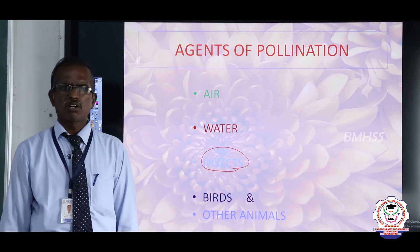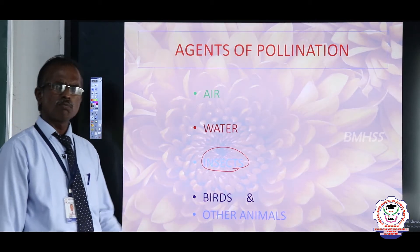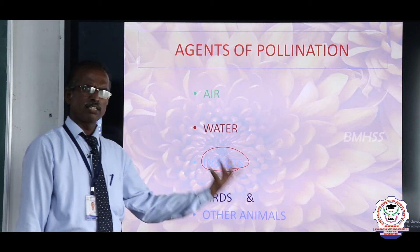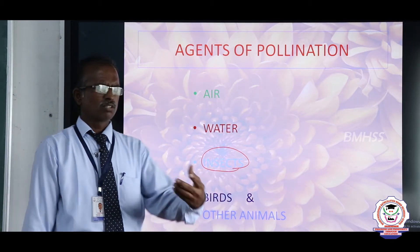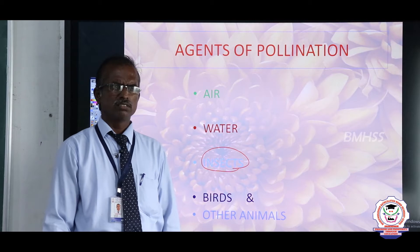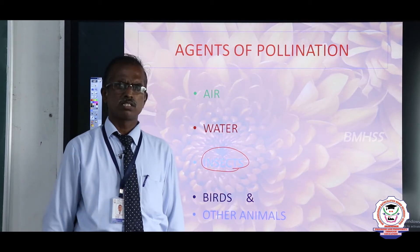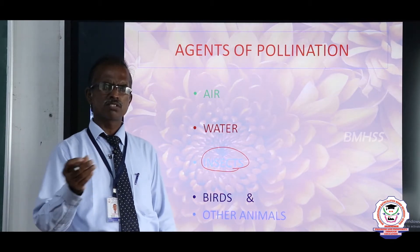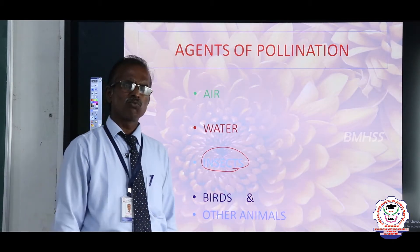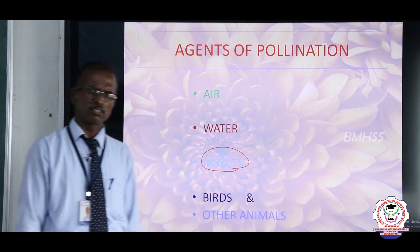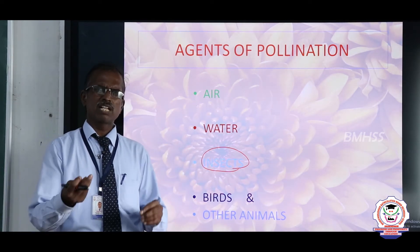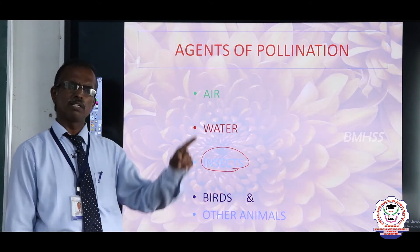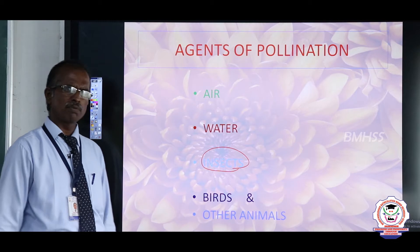Those flowers are called entomophilous. Entomophilous flowers are brightly colored. If you get a chance, go to the garden and observe. If you scrutinize most of the plants, there are flies, insects, and birds roaming. What are they doing there? They help in transfer of the pollen grain from one flower to another flower. They help in pollination.